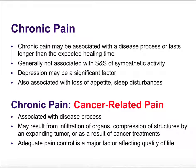Chronic pain may be associated with a disease or may be pain that lasts longer than the expected healing time. It's generally not associated with signs and symptoms of the sympathetic nervous system. Being in chronic pain can be difficult, so depression is a significant associated factor, along with loss of appetite and sleep disturbances. Chronic pain can be associated with many different diseases and conditions.